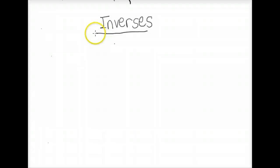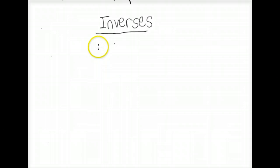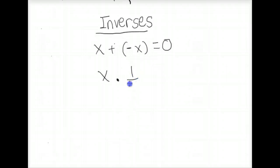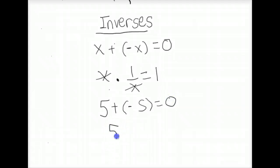The last property is the inverses axiom. Any real number has a unique additive inverse as well as a unique multiplicative inverse. For example, if we have x and add its additive inverse, negative x, we get 0. Similarly, if we have x and multiply it by its multiplicative inverse, 1 over x, we get 1 because the x's cancel. For real number examples: 5 plus negative 5 equals 0, and 5 times 1/5 equals 1.